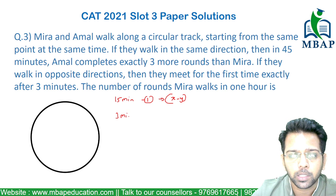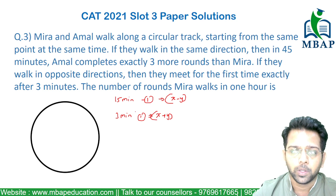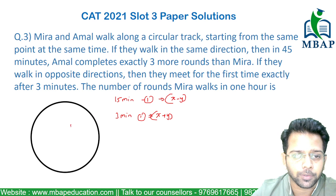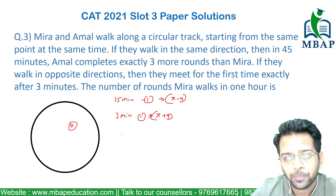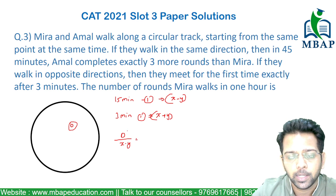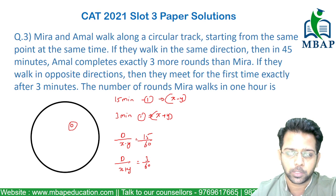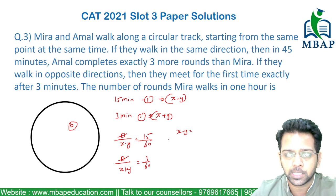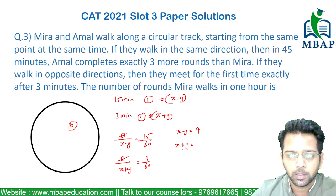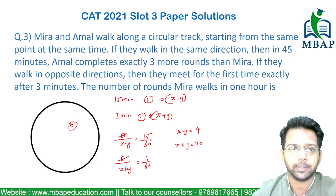They meet in 3 minutes for the first time when going in opposite directions, where relative speed is x plus y. Since the distance is the same circumference d in both cases: d divided by (x minus y) gives a time of 15/60, and d divided by (x plus y) equals 3/60. Dividing these equations, d cancels out, giving x minus y equals 60/15 which is 4, and x plus y equals 60/3 which is 20.